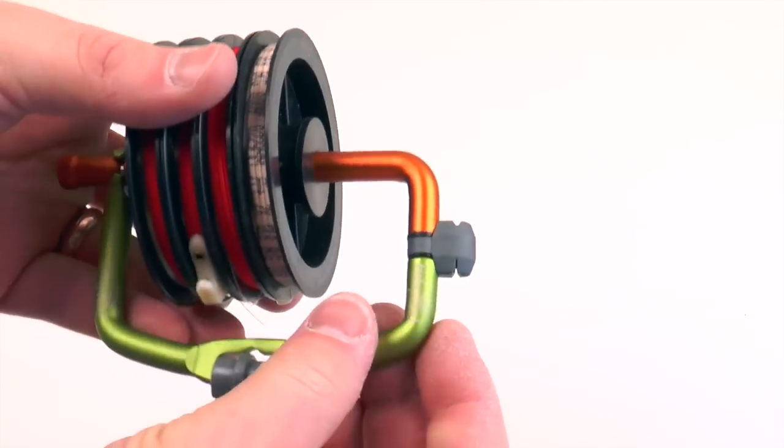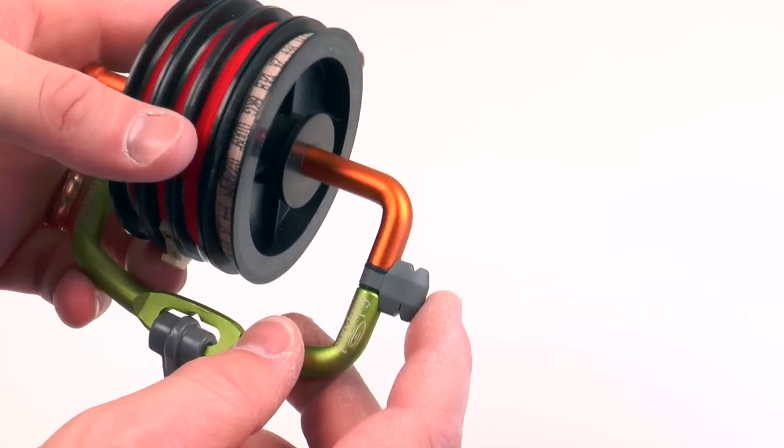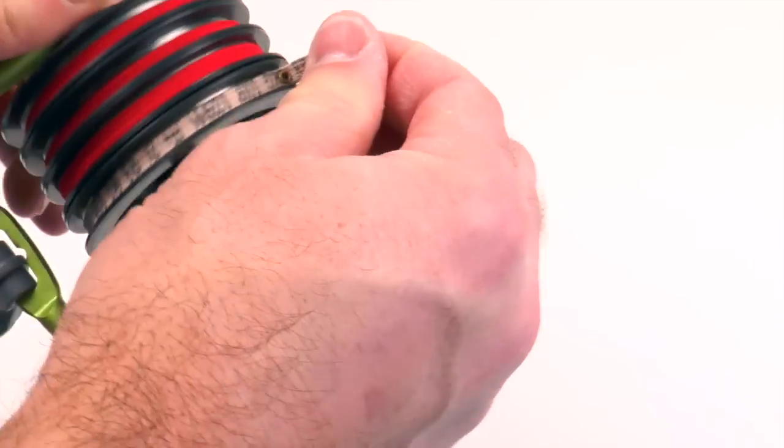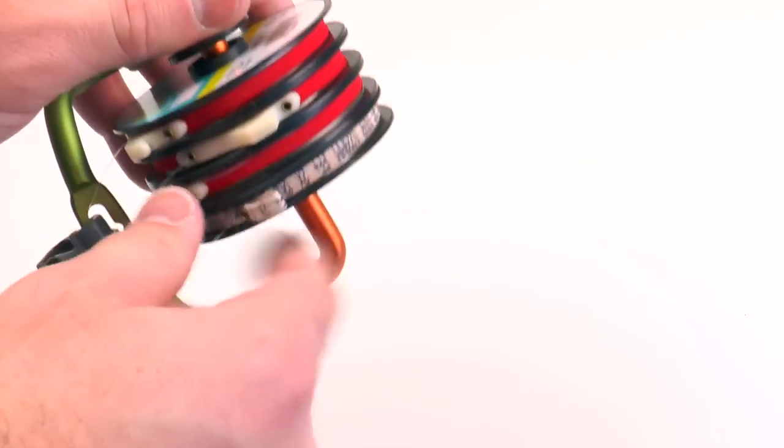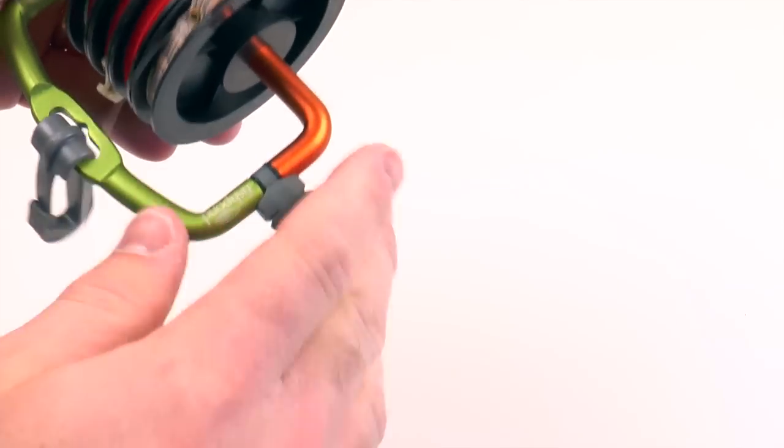Now one of my favorite features, and it's kind of hidden, is this little built-in line trimmer. All you have to do is pull off some tippet here, and instead of using a nipper, you have this trimmer.